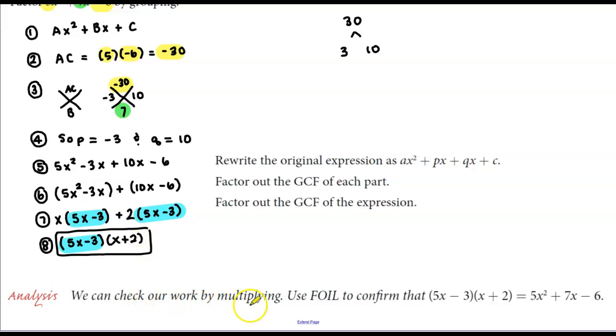We can check our work by multiplying. We can use FOIL, the distributive property, or the box method to confirm that when we multiply this together we get our original expression.